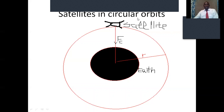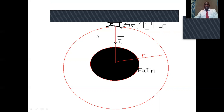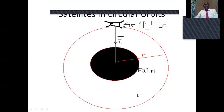Here we depict the application of concepts in circular motion in our day-to-day life. We show a satellite that is orbiting the Earth, going around the Earth at a distance measured from the center of the Earth to where the satellite is. There exists a force towards the center of the Earth from the satellite, which is known as the centripetal force.